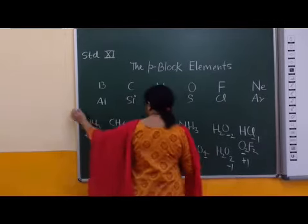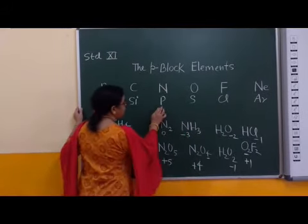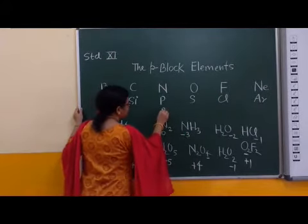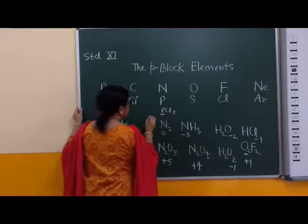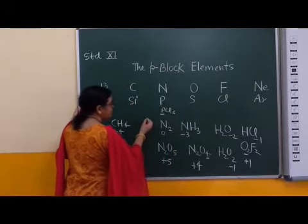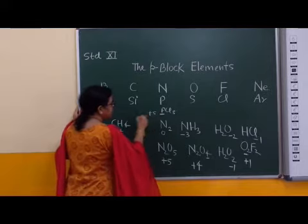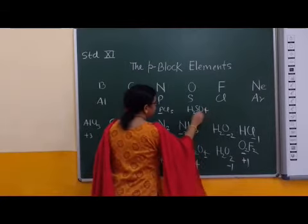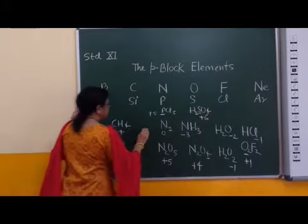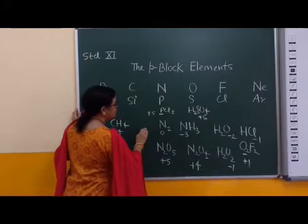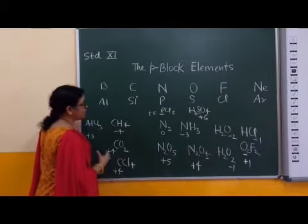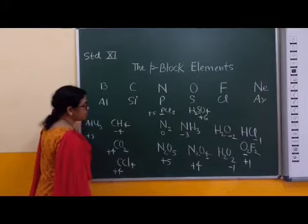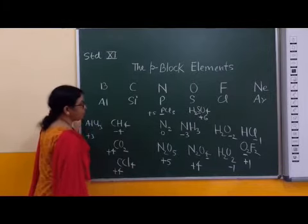Other compounds. Then compound of phosphorus, PCl5. Its oxidation number is 5. This state is positive plus 5. Sulfur in sulfuric acid, its oxidation state is plus 6. In this manner, we can determine oxidation state of any element in any compound. These are different oxidation states of p-block elements.